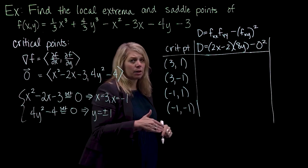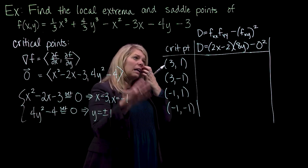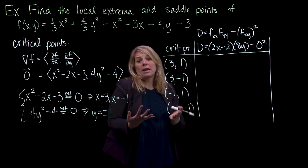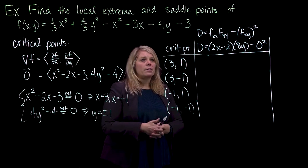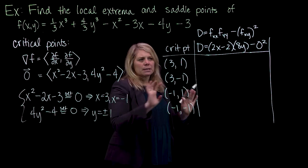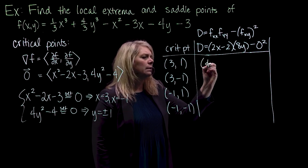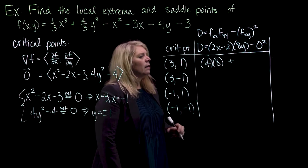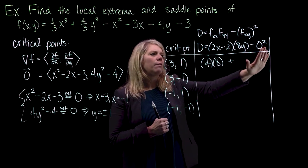I'm interested in whether the result at each critical point is positive or negative. If this answer turns out to be zero, the theorem cannot discriminate between maxima and minima, and we can't use it. So when I put in x equals 3, I get 2 times 3 minus 2, which is 4. When I put in y equals 1, I get 8. So 4 times 8 is positive. I started with this problem because the mixed second derivative turns out to be zero.